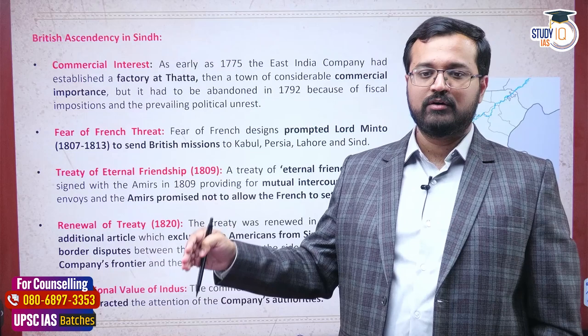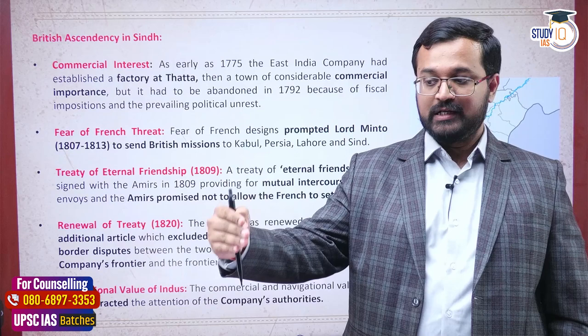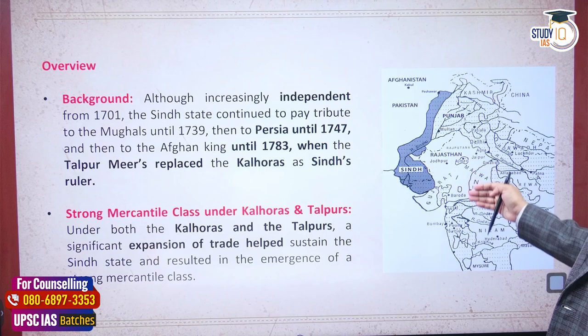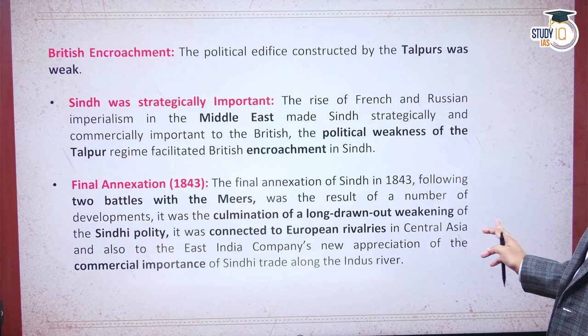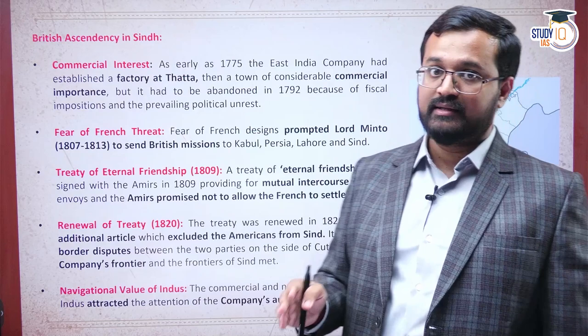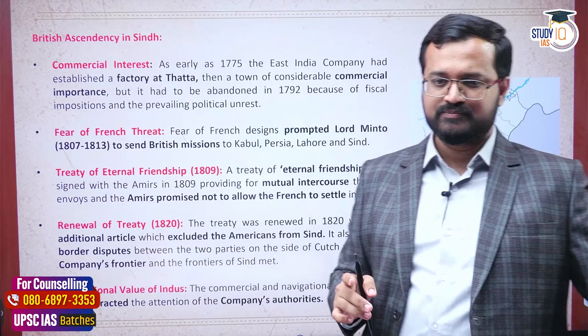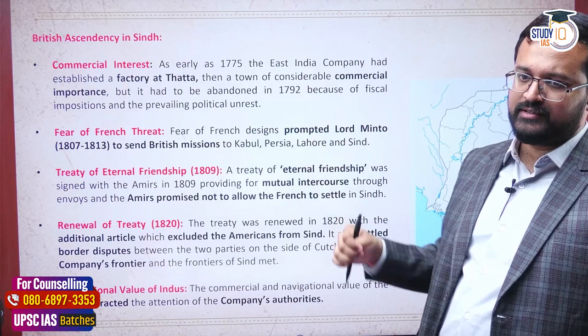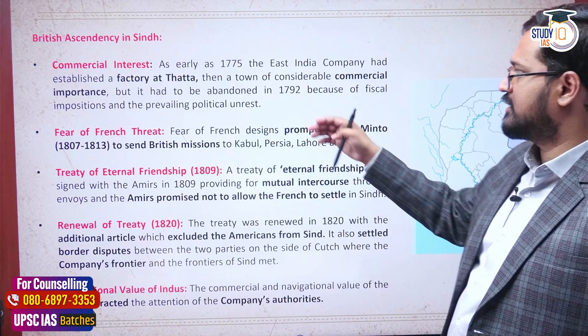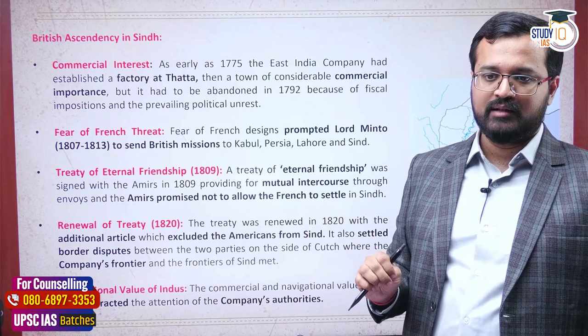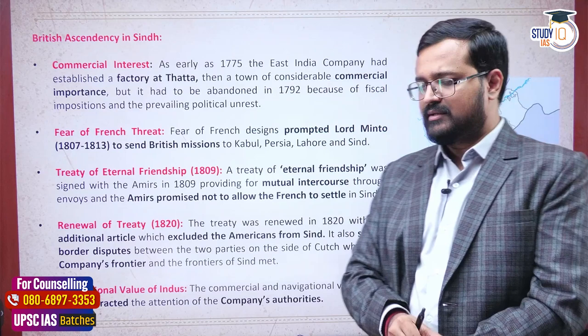Bombay Province was right next to Sindh, and that's how the British gradually came into contact with Sindh. However, British interest in Sindh had actually started as early as 1775, when they established a factory in the Thatta area near the Sindh River with the local ruler's help. By 1792, because of local conditions under Fat Ali Khan's numerous local revolts, the British closed their political factory there.